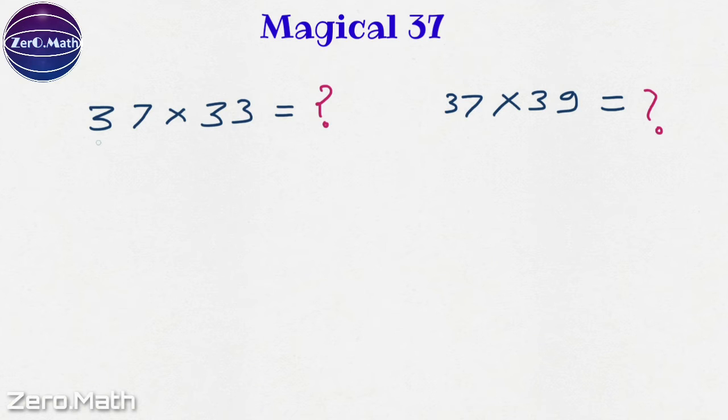Let us multiply 37 by 33. So as per our trick, we will divide this 33 by 3 and write it 3 times. So 33 by 3 is 11. And we'll write 11 three times to get the answer. However, can you tell me, does this answer look correct to you? Obviously not.